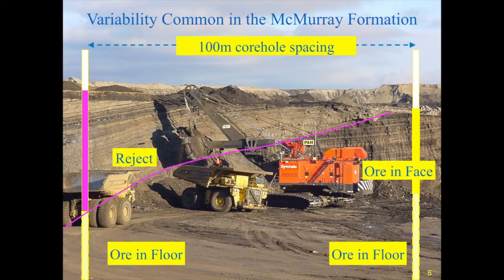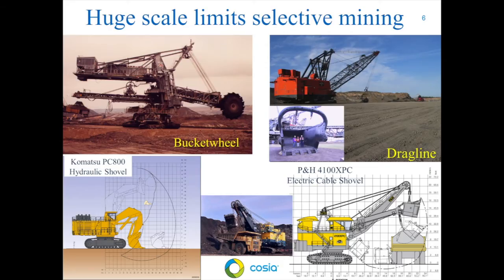Notice the difference in core holes only 100 meters apart. If we could mine to exclude the clay lenses, the water extraction process could be more efficient, and I wouldn't be here talking to you about fluid tailings. However, the mining equipment is very large, and selective rejection of these thin clay lenses has not been practical. The huge scale of mining limits selectivity.